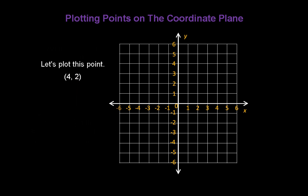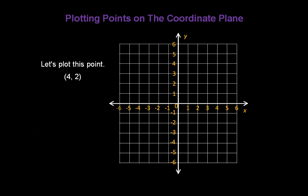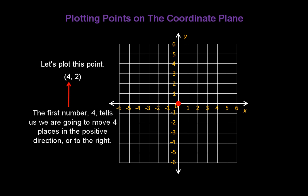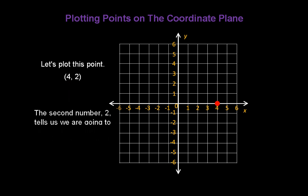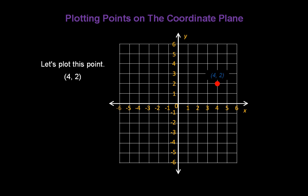Let's go ahead and plot the point (4, 2). All plotting starts at the origin. Since the origin is the beginning, its ordered pair is (0, 0). The first number, 4, tells us we're going to move 4 places in the positive direction, or to the right. The second number, 2, tells us we're going to move 2 places in the positive direction on the y-axis, or up the grid. Our point is now at (4, 2).